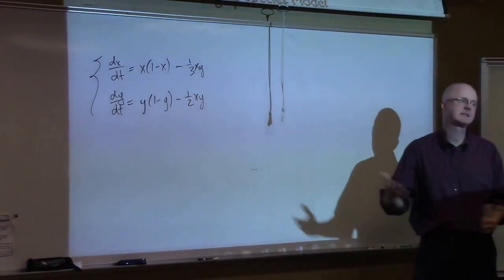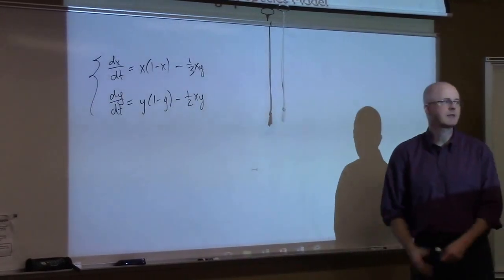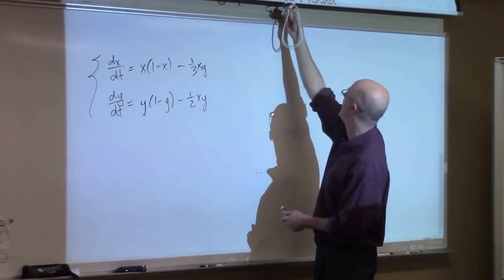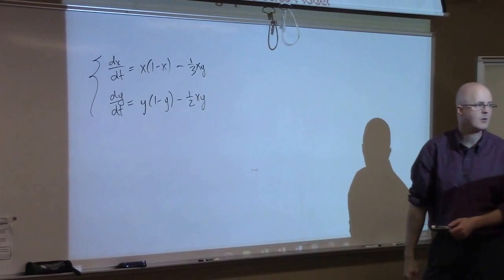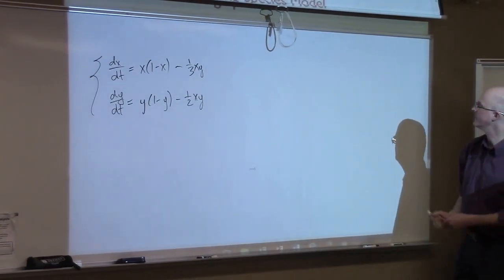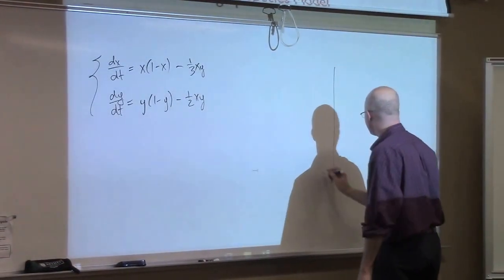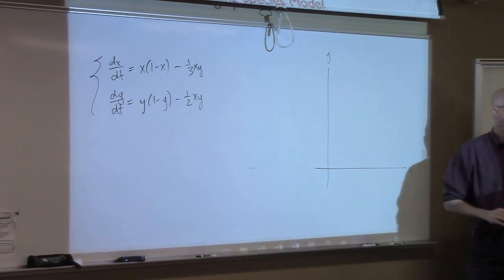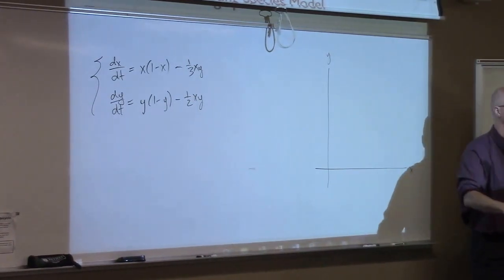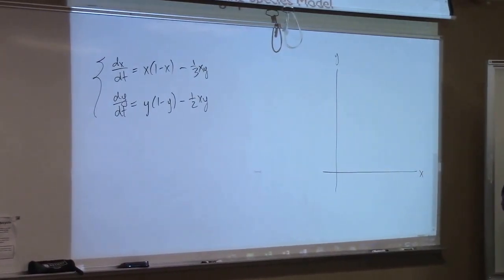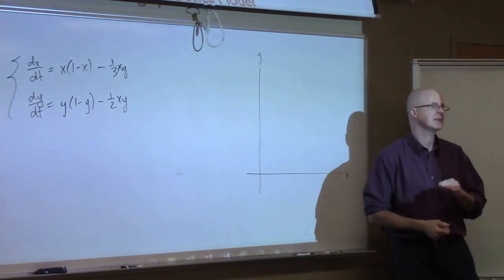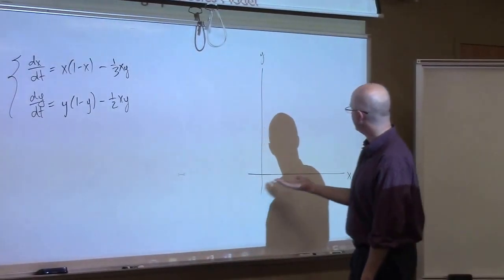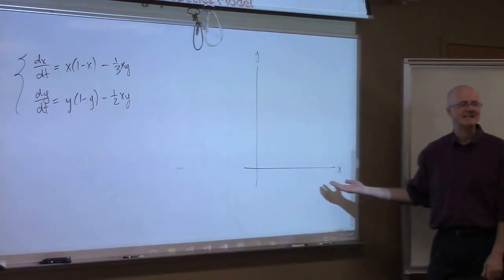Pretend this is a final exam question. I want you to make the phase plane for this. How would you go about thinking about it? It's good to think about what is happening to each individual species in the absence of the other. For example, what's happening to x when y is zero — what's happening along the x-axis?